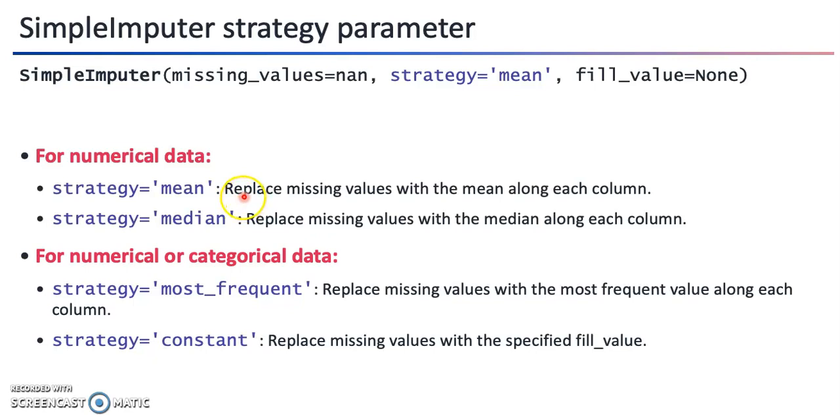You can see that for numerical data, mean and median are reasonable values of statistics to use to fill in blanks. The most frequent one, the so-called mode, is something that's applicable for both numerical or categorical data. We may also choose to replace with specific placeholders.